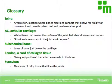A tendon is a strong support band — basically like a cord of collagen tissue — and it attaches a muscle to the bone. Synovium is a thin layer of cells or tissue that lines the joints.